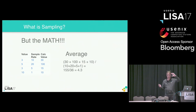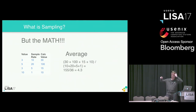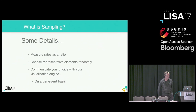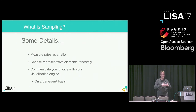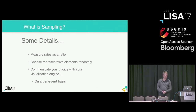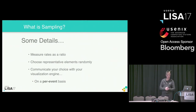Nobody wants to be sitting there staring at a graph thinking, I need to multiply that one by two because I sampled that at 50% and so on. So a couple of details just to make sure we're all clear: when I'm talking about sampling, it's events coming out of an infrastructure or production system that represent some unit of work. Each event has many fields, some of which we can use to influence whether or not that record is interesting.